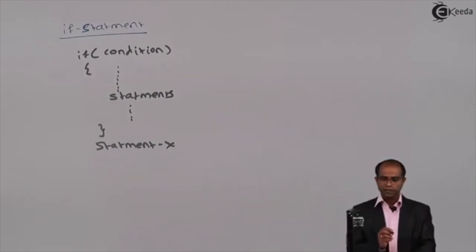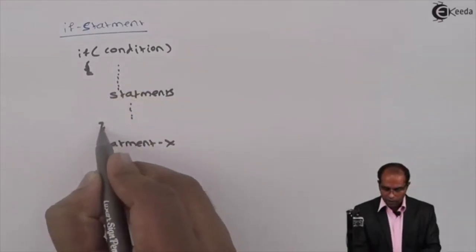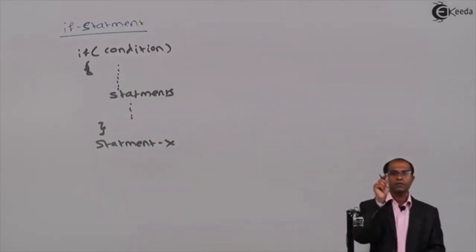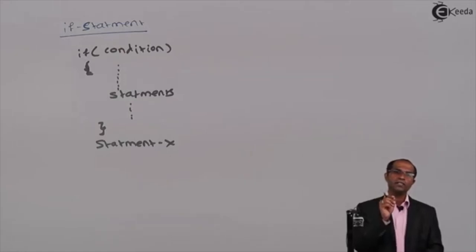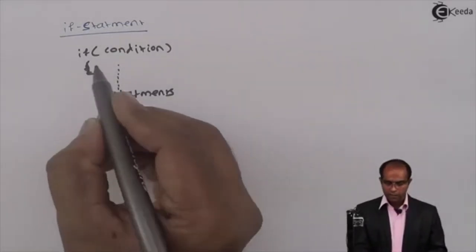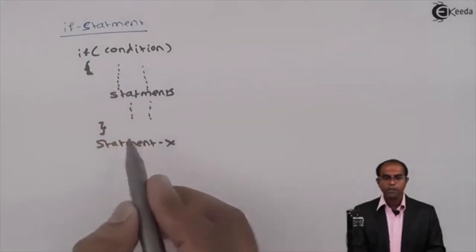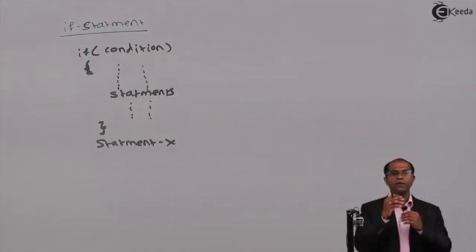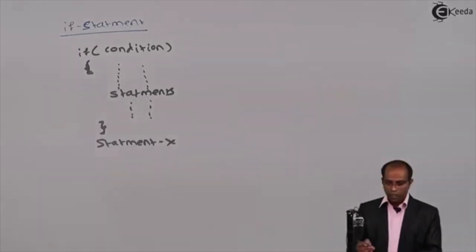The condition has to be written in such a way that it will result into true or false, and then a block of statements which are supposed to be either selected or ignored should be enclosed in a pair of curly brackets. Till now we have been using curly brackets only with main, but in this case curly brackets indicate the start and end of the if block. A closing curly bracket indicates the end of this particular block. There will be some program which appears before if and some program which appears after if — let's identify that as statement x.